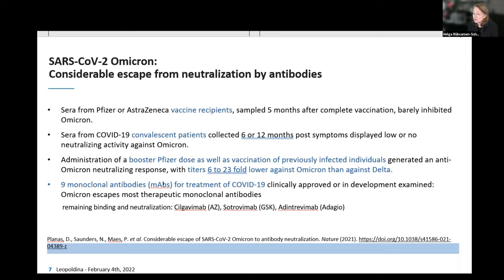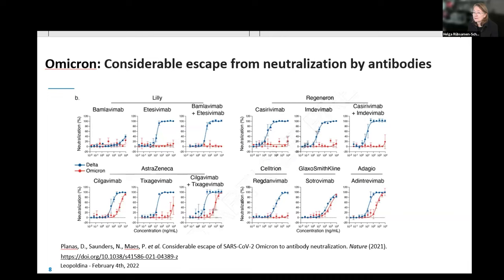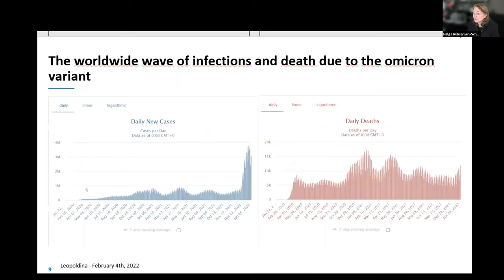When it comes to treatment, nine monoclonal antibodies that were clinically approved or in development — Omicron escapes most of these therapeutic monoclonal antibodies. The red curves here show neutralization activity against Omicron, and in most cases it is absolutely flat; the blue curves are Delta. One antibody, Silgavimab, retains some neutralizing activity in combination. Trovimab and Adintrevimab are among the few monoclonal antibodies left that we can use for treating people.